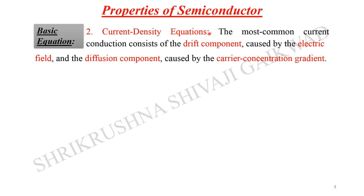The next equation is the current density equation. We know that J = sigma × E, where J is the current density and E is the electric field. The most common current — conduction current — consists of a drift component caused by the electric field, and a diffusion component caused by the carrier concentration gradient. Inequalities in carrier concentrations cause diffusion of charges from one side to the other.